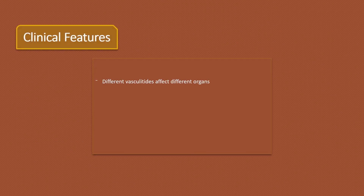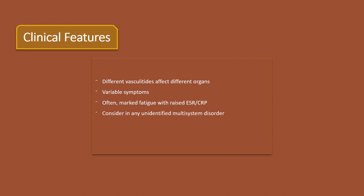Coming on to clinical features, different vasculitides preferentially affect different organs, causing a variable pattern of symptoms. Often there is only overwhelming fatigue with raised ESR and C-reactive protein. Consider vasculitis in any unidentified multi-system disorder. If the presentation does not fit clinically or serologically into a specific category, consider malignancy-associated vasculitis.